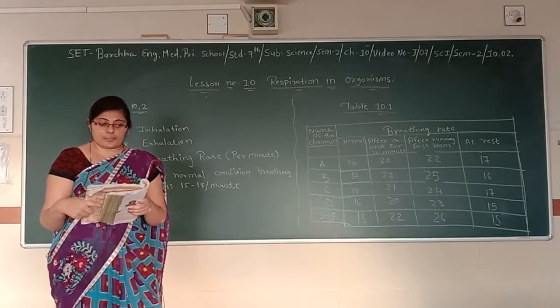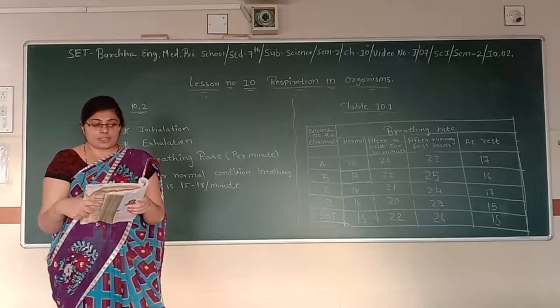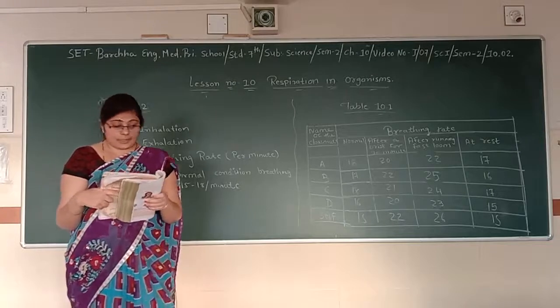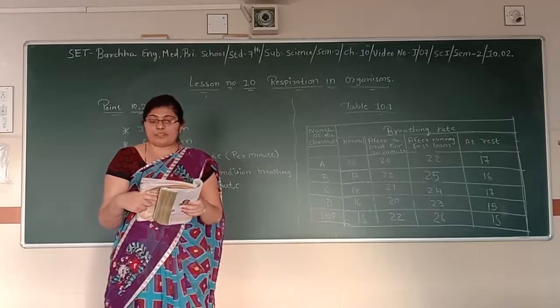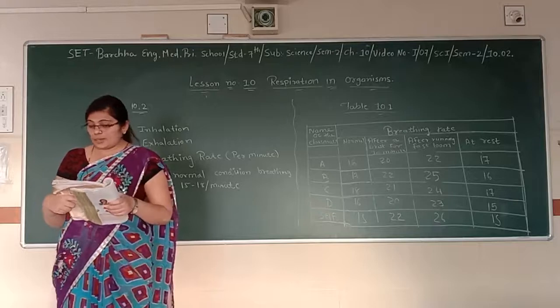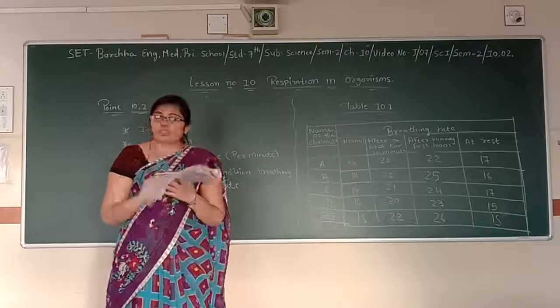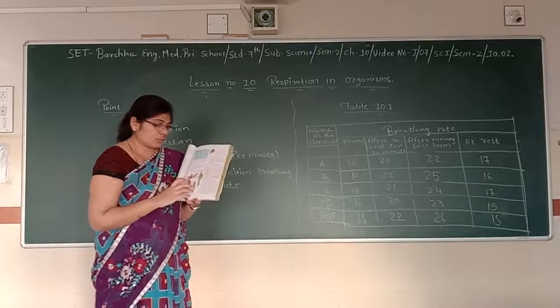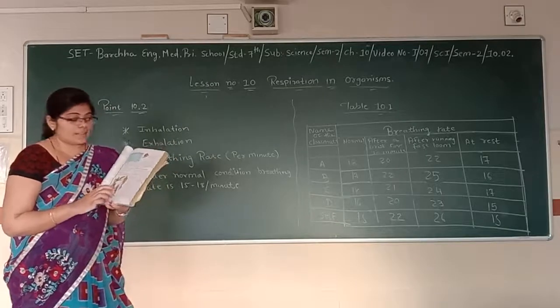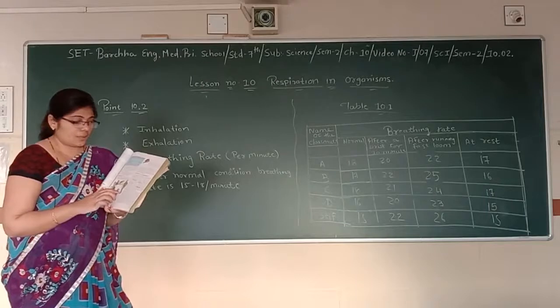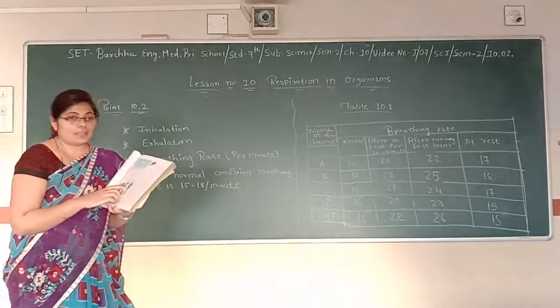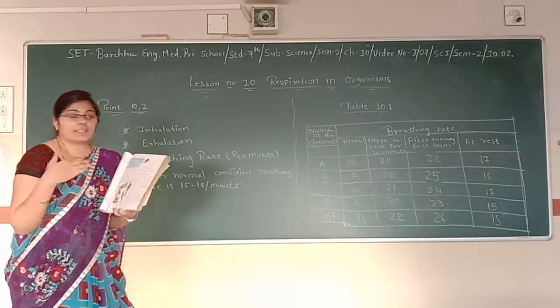Activity 10.3. Figure 10.3 shows the various activities carried out by a person during a normal day. Can you say, in which activity, the rate of breathing will be the slowest and in which, it will be the fastest? Assign the number to the picture in order to increase the rate of breathing according to your experience. See, in this activity, some activities are given. Like, a woman is washing clothes, then a student is reading, then a boy is working, a man is working very hard, a girl is dancing, and an old man is taking a walk. So, in which activity, the breathing rate gets slowest? In sleeping, while sleeping, the breathing rate gets slowest, and while dancing, the breathing rate gets increased.